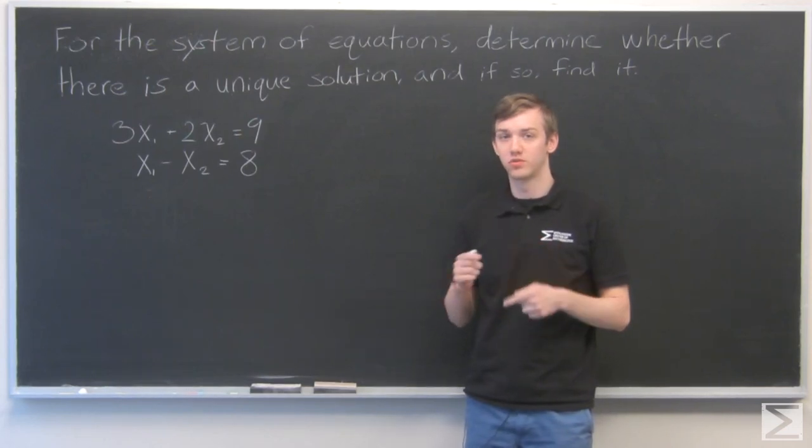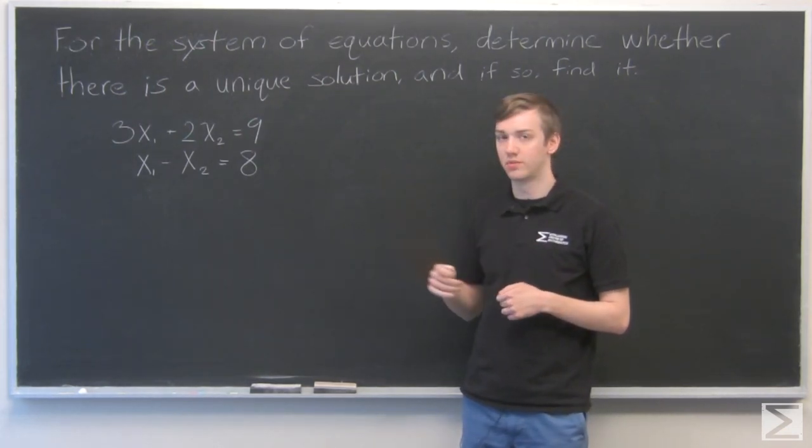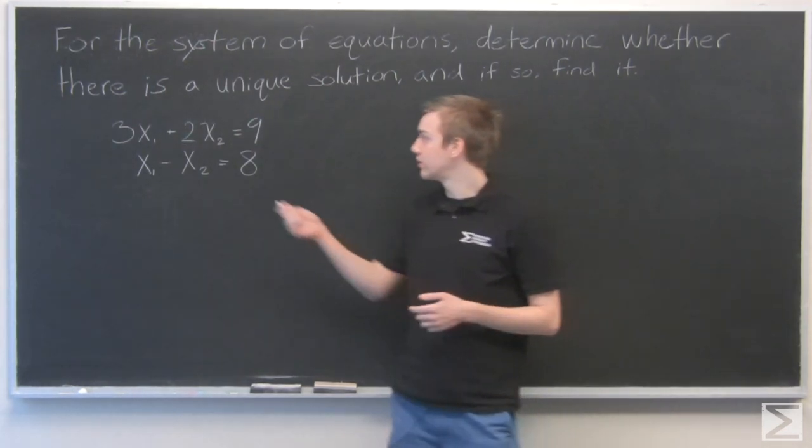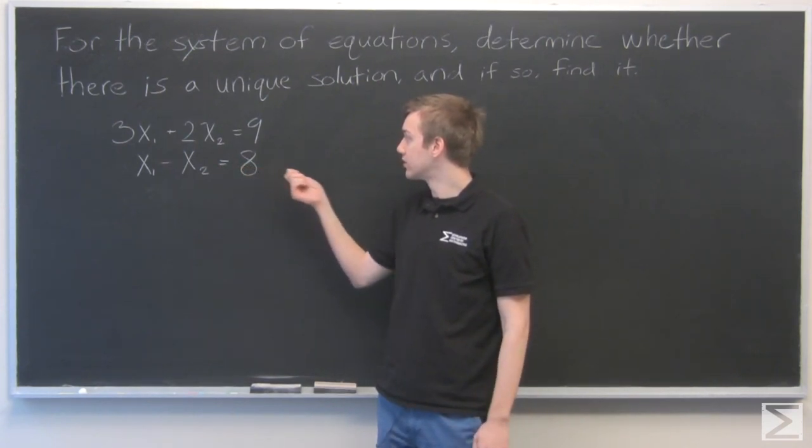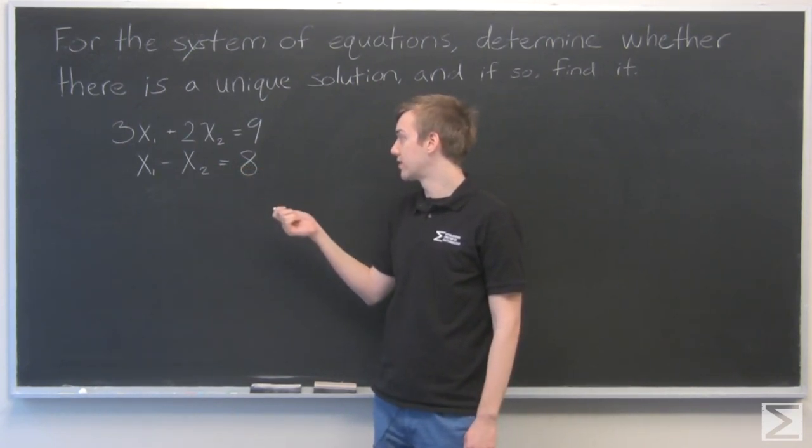And we solve it just by subtracting multiples of each equation from each other. So this is 3x1 plus 2x2 equals 9, and x1 minus x2 equals 8.